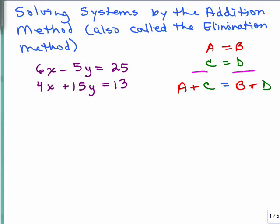This is the idea of the addition method. If you have two equations and you line up your equal signs, if you add the left sides of each equation together and then you add the right sides of each equation together, you'll get another true equation. Now, looking at this particular example, if I added the left side together, I would get 10X plus 10Y equals 38, which really isn't any more useful than either of my original equations.